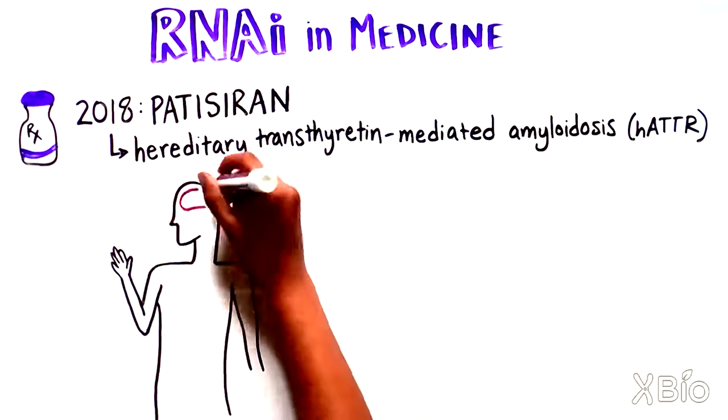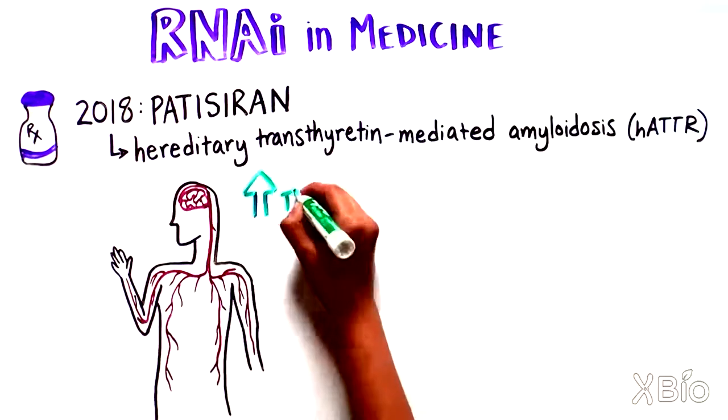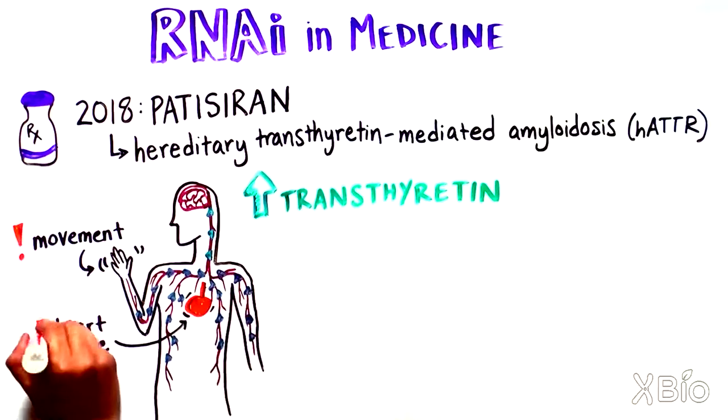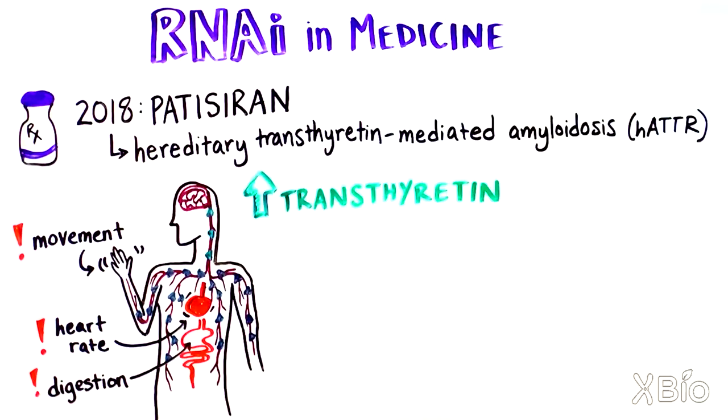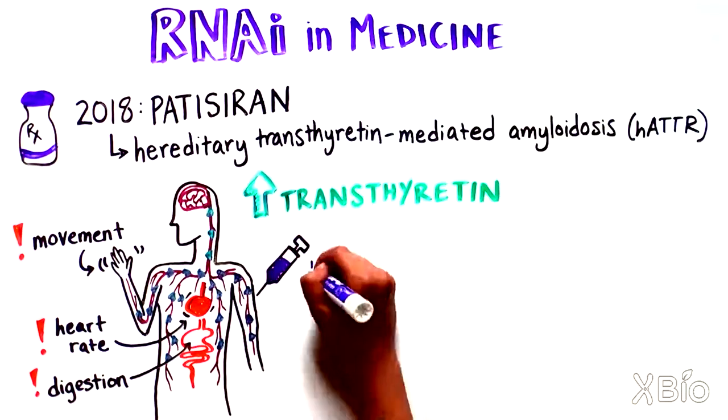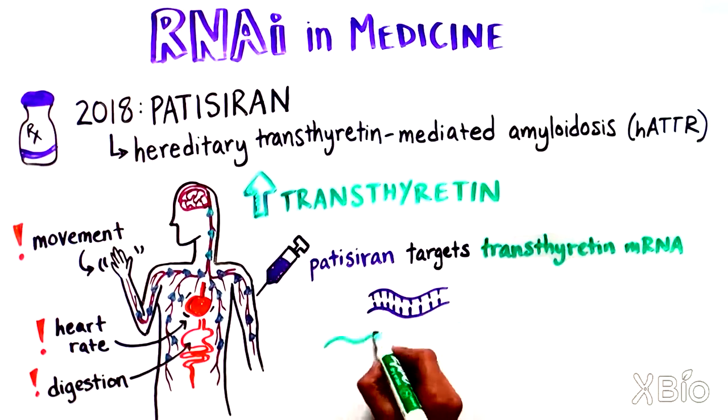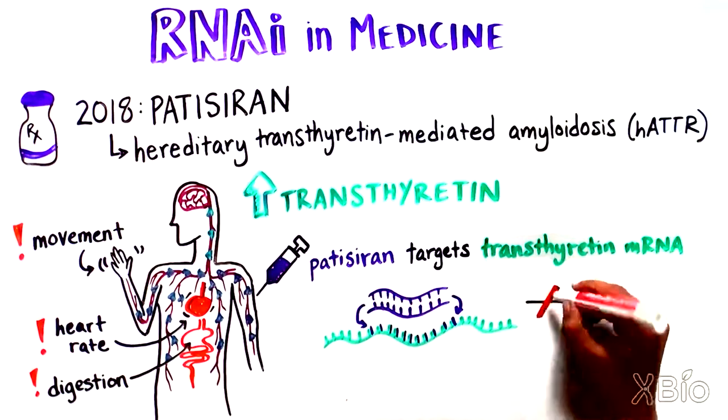This disease is characterized by the abnormal buildup of a protein called transthyretin in the nervous system, which can impact movement, heart rate, and digestion. Patisiran directly targets the RNA responsible for making transthyretin, thereby limiting accumulation of the disease-causing protein.